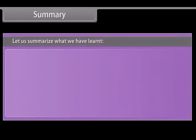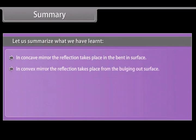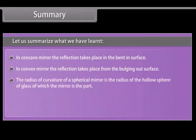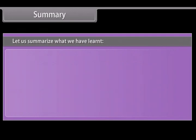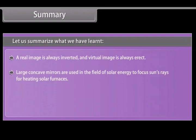Summary: in a concave mirror, the reflection takes place at the bent-in surface; in a convex mirror, the reflection takes place from the bulging-out surface. The radius of curvature of a spherical mirror is the radius of the hollow sphere of glass of which the mirror is a part. The focus of a convex mirror is situated behind the mirror. The image is formed at the point where at least two reflected rays intersect. A real image is always inverted, and a virtual image is always erect. Large concave mirrors are used in the field of solar energy to focus the sun's rays for heating solar furnaces. The object distance U is always negative in mirrors.